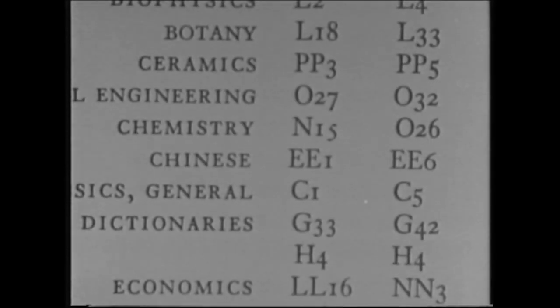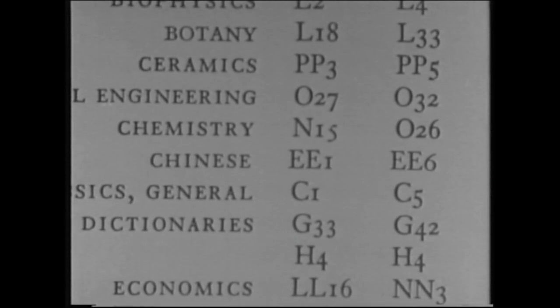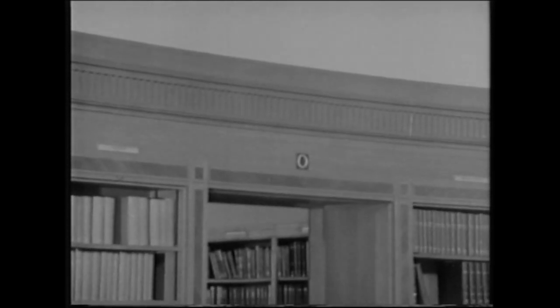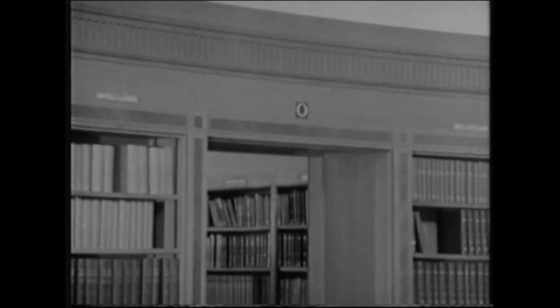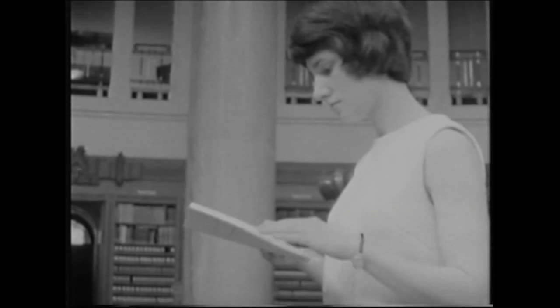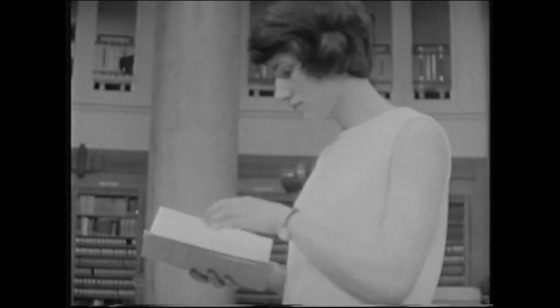For example, if you are looking for chemistry books and periodicals, the index will tell you that these are to be found from strip N15 to strip O26. You will naturally look for these in bays N and O at the main floor of the reading room. If you merely wish to browse among the chemistry books, this is all you need to know.